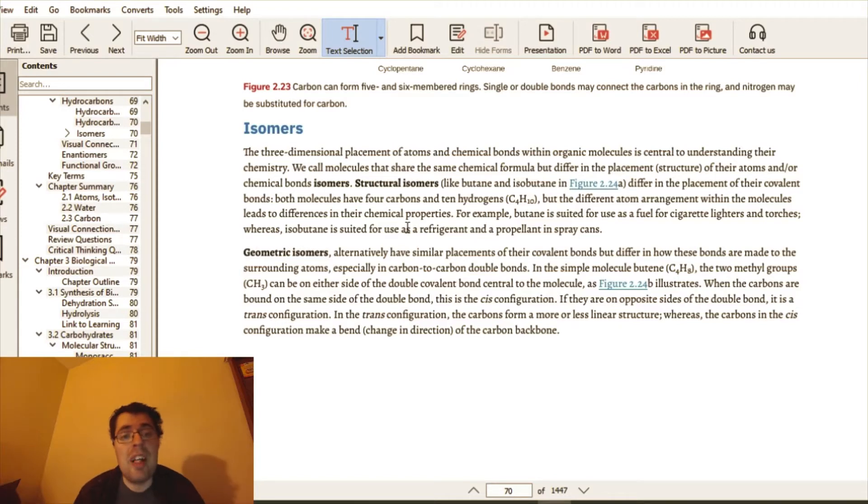Isomers. Three dimensional placements of atoms and chemical bonds within organic molecules is central to understanding their chemistry. We call molecules that share the same chemical formula but differ in the placement of their atoms and chemical bonds isomers. What essentially that means is there are different types of isomers, but what that means is, let's say you have a gas that is one carbon, three hydrogen. Your isomers would be: one particular molecule has carbon and hydrogen here, hydrogen west, hydrogen east, hydrogen north, hydrogen west. Another isomer could have hydrogen north, hydrogen east, hydrogen south.